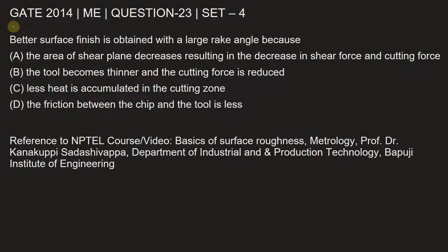This question is from GATE 2014 Mechanical Engineering paper, set four, question number 23. Better surface finish is obtained with a large rake angle because — option A: the area of shear plane decreases, resulting in the decrease in shear force and cutting force.